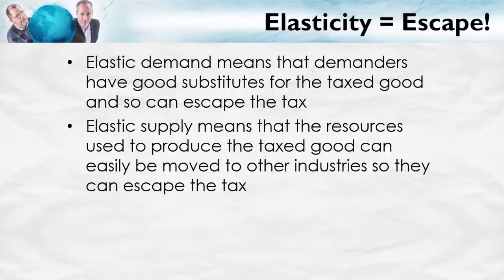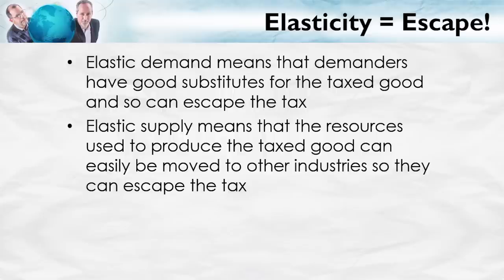What about the supply side? Elastic supply means the resources used to produce the taxed good can easily be moved to other industries. If you try to tax the industry a lot, then the land, the capital, the workers in that industry are just going to flow to other industries, so the suppliers can relatively easily escape the tax. On the other hand, if supply is inelastic, the resources used to produce this good can really only be used to produce this good — they're fixed, hard to move around, and not that useful for producing other goods. So it's difficult for the suppliers to escape the tax.